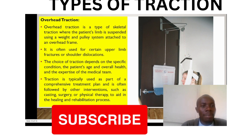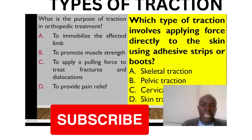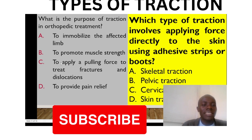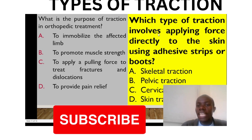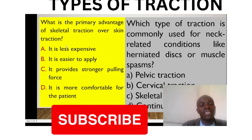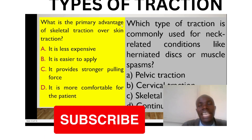Overhead traction is a type of skeletal traction. Now for common exam questions: What is the purpose of traction in orthopedic treatment? It is to apply a pulling force to treat fractures and dislocations — B is the correct answer. What type of traction involves applying force directly to the skin using adhesive strips or boots? That is skin traction. What is the primary advantage of skeletal traction over skin traction? It provides a better, stronger pulling force compared to skin traction.